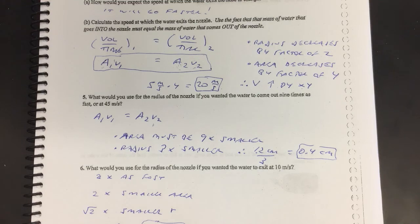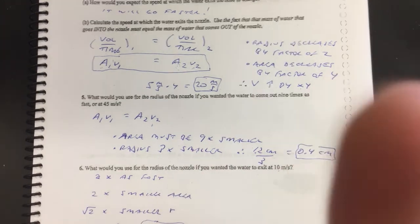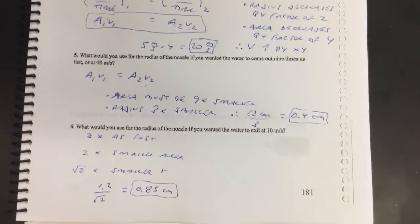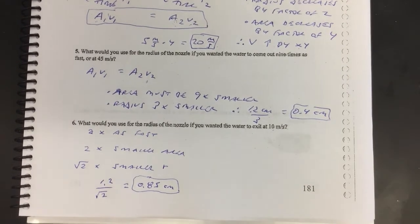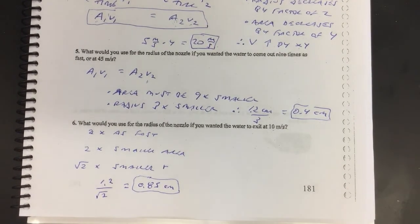Let me move the camera down so you could actually see the last line there. 1.2 divided by root 2 is 0.85.